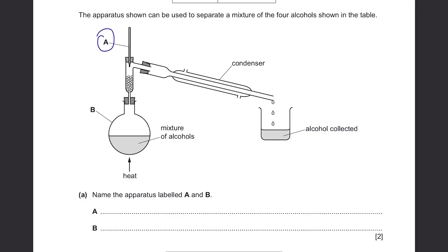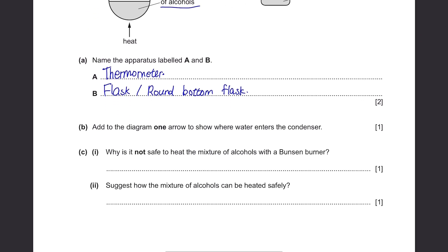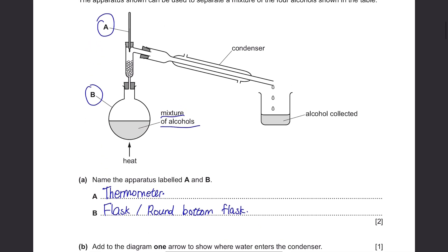A is the stick, it's a thermometer. And B is the one that contains mixture of alcohols. It's not a beaker, it's a flask. Or you can also say round bottom flask. Part B, add to the diagram one arrow to show where water enters the condenser. Water is supposed to enter the condenser through this bottom entry and leave the condenser with this top entry. So just leave an arrow here.